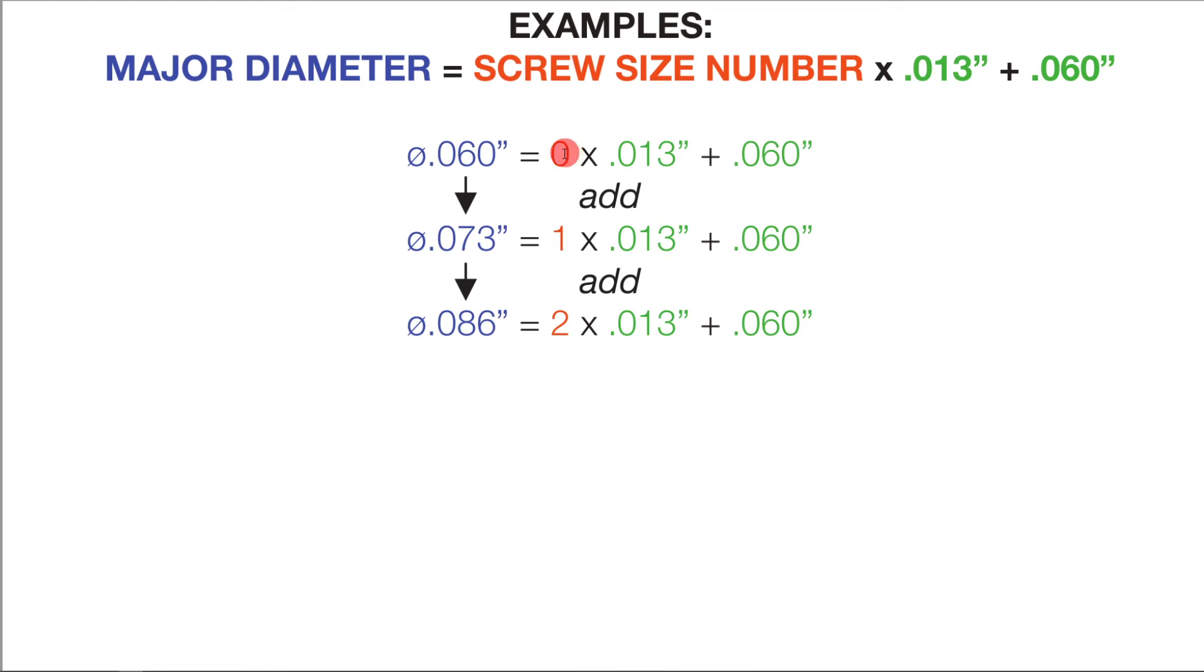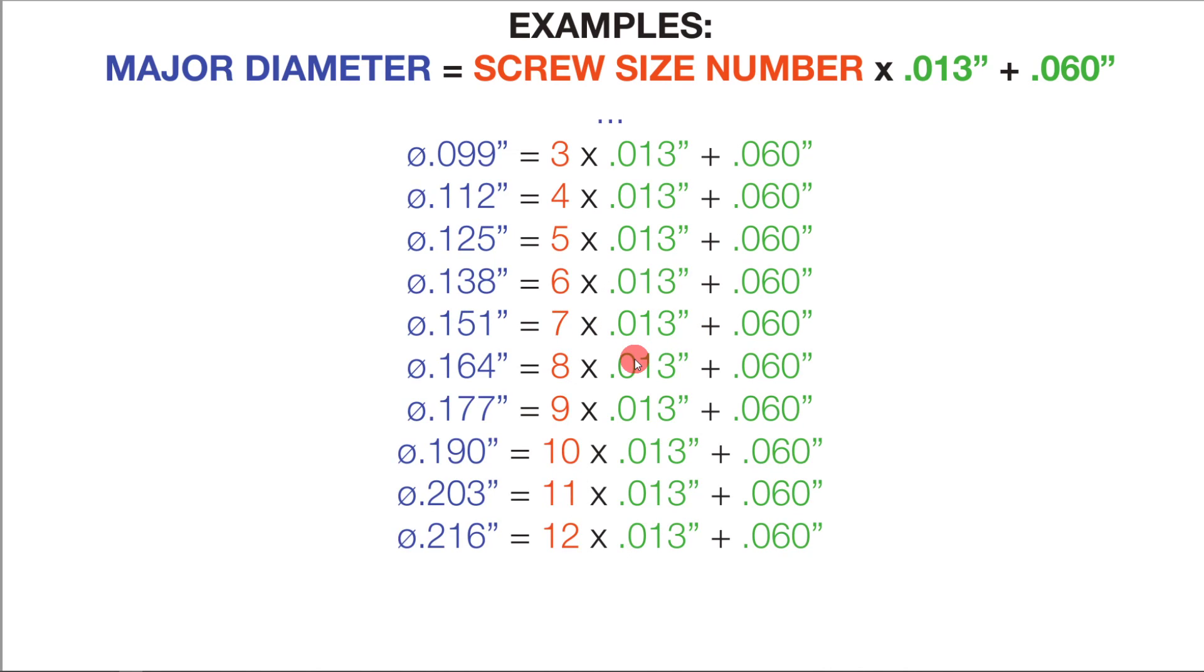We started off with zero where we did not add thirteen thousandths. Then when we got to number one we had our first thirteen thousandths. When we have number two we have our second thirteen thousandths, and we continue adding thirteen thousandths to get to three, four, five, six, seven, and so on and so forth.